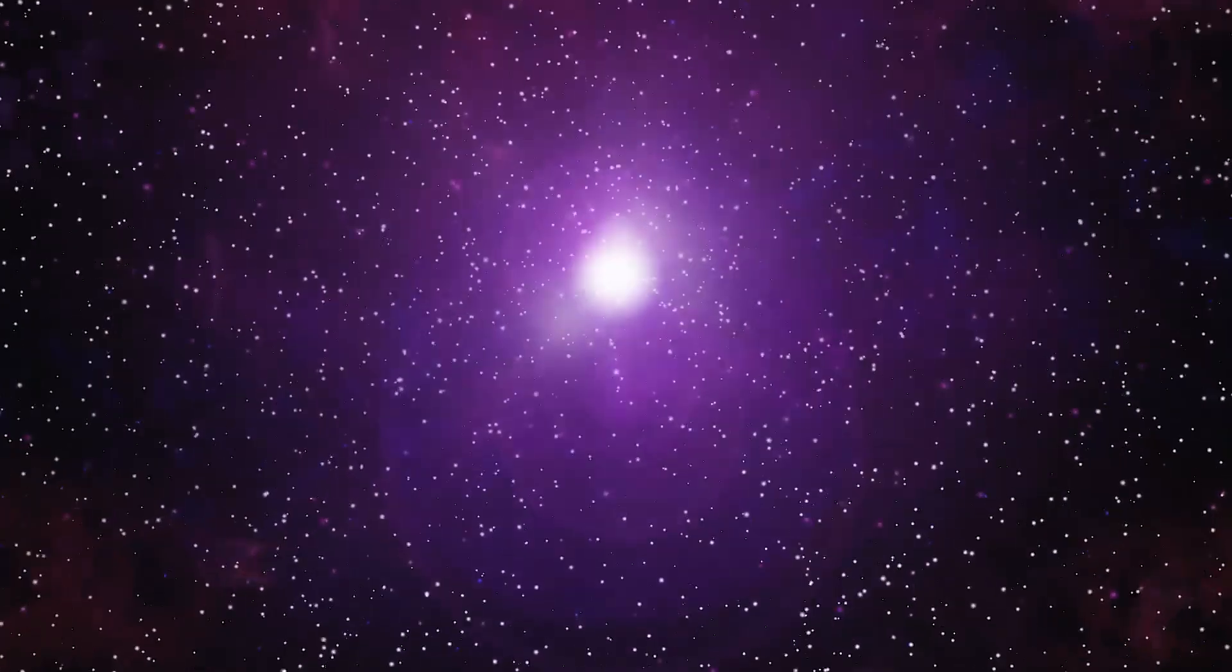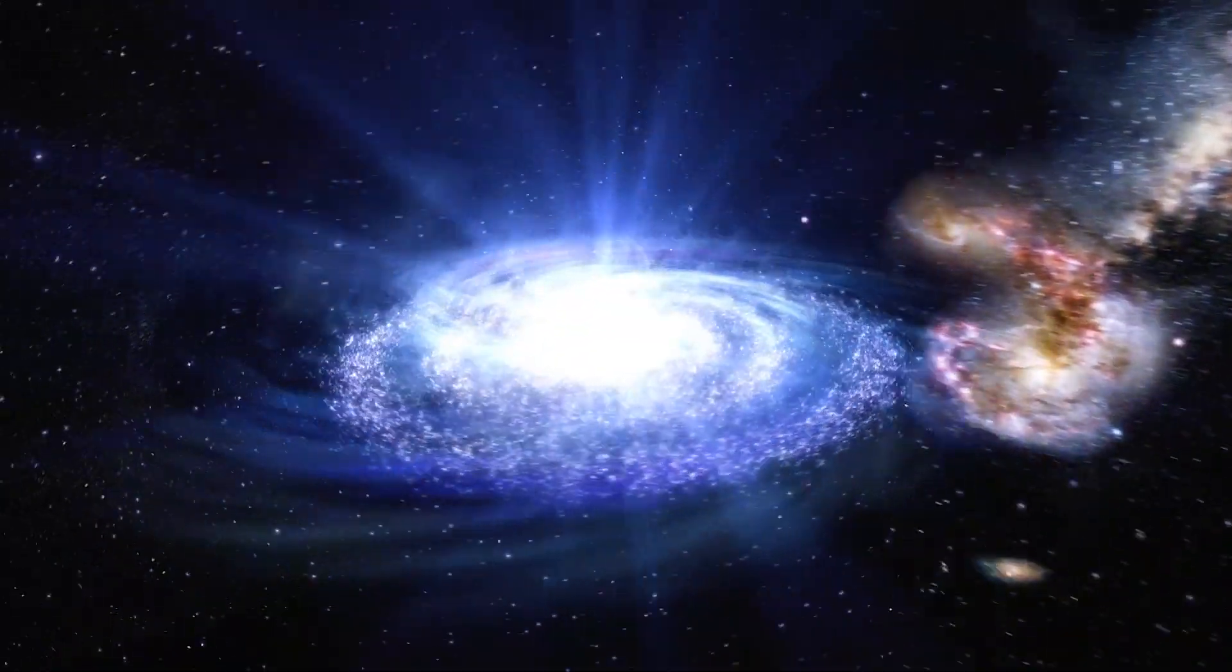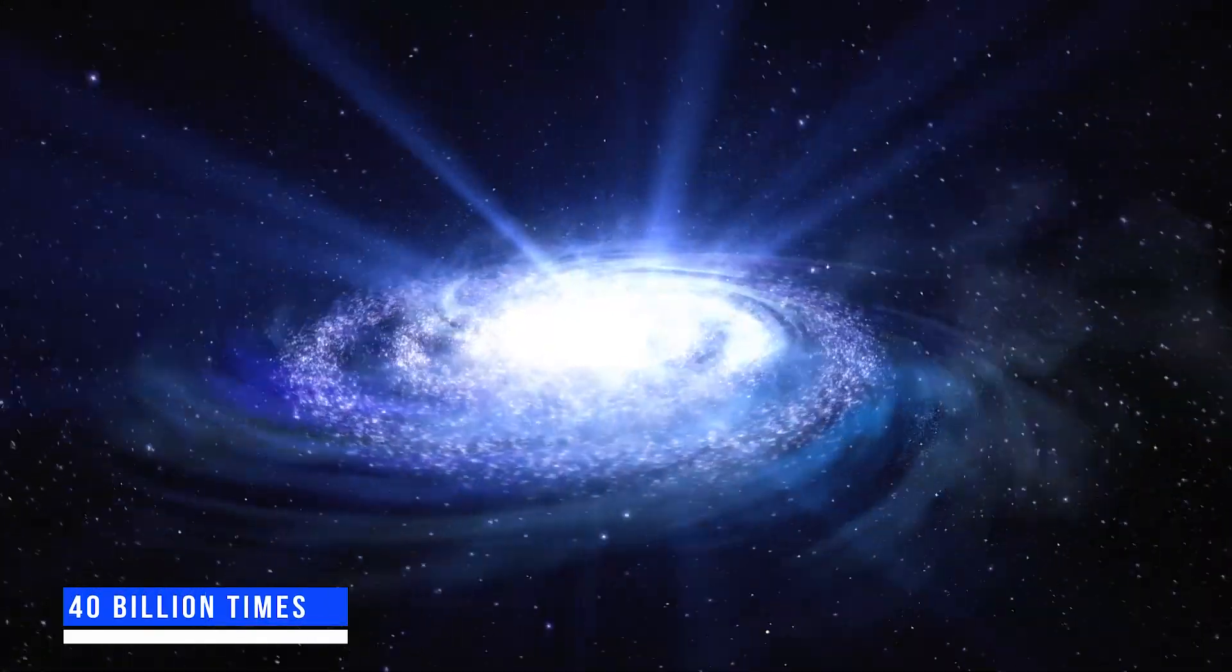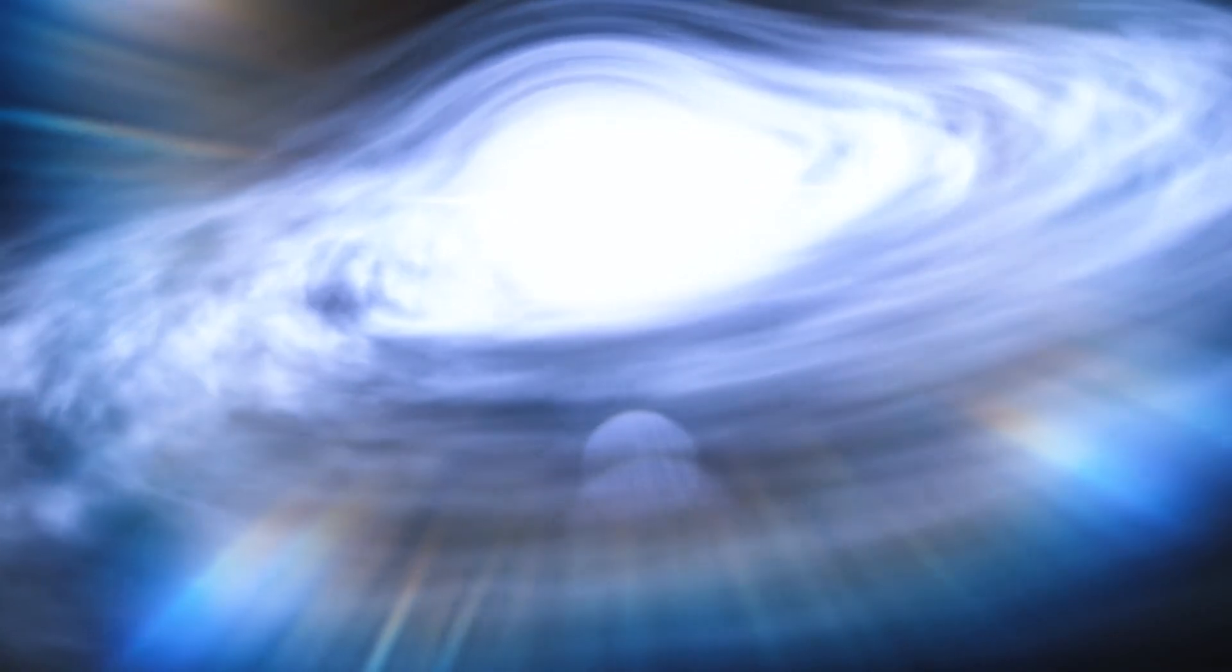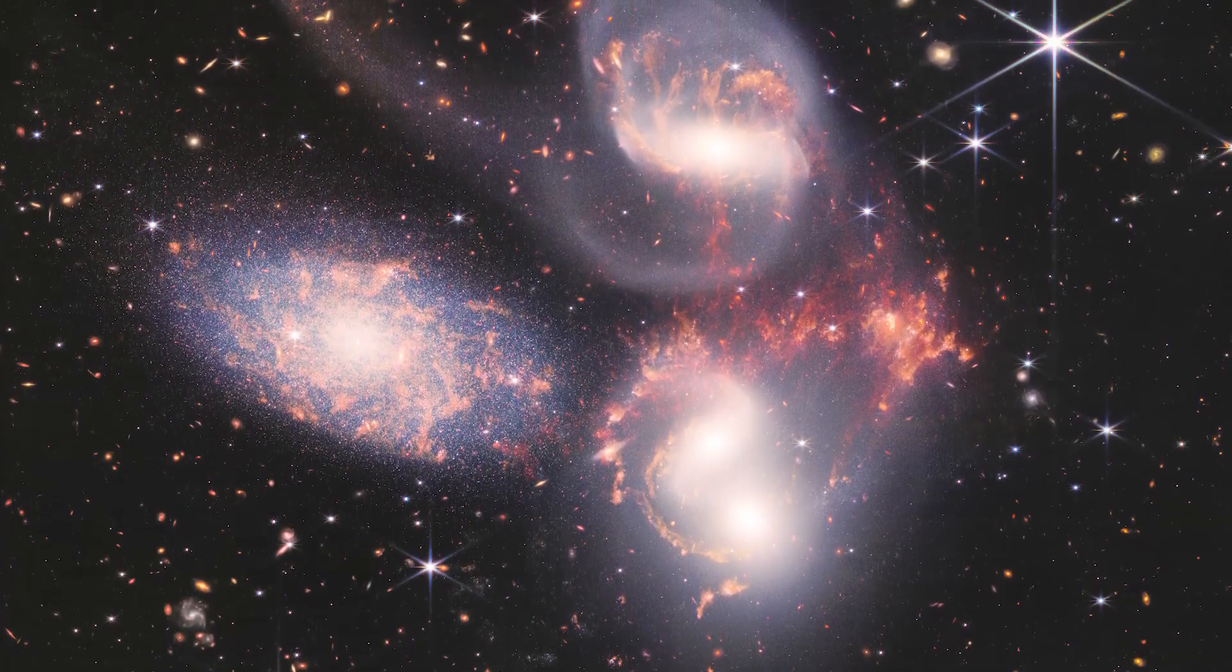Furthermore, Stephan's Quintet portrays how four galaxies collided with each other in slow motion, much like a train wreck. They are trapped in close contact that is being forced by gravity. Despite being 40 billion times brighter than the sun, an active supermassive black hole engulfing debris from the surrounding galaxy is seen as a luminous glow in the upper right of the galaxies.